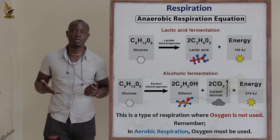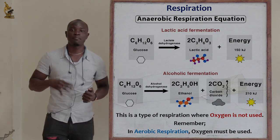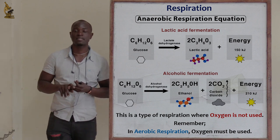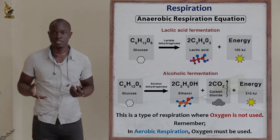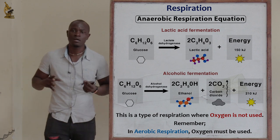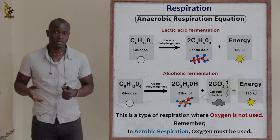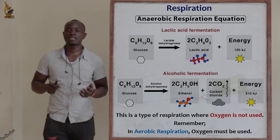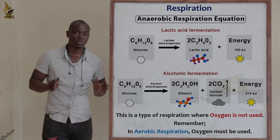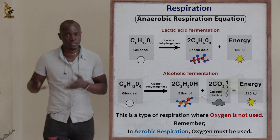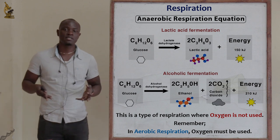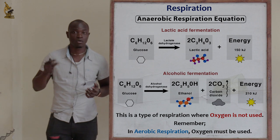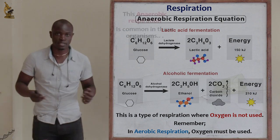That is anaerobic respiration. It mainly involves the breakdown of food substrate — proteins, fats, carbohydrates — in the absence of oxygen. Oxygen is not required for this respiration to take place. If oxygen is made available, the organisms undertaking anaerobic respiration are going to die because oxygen will be poisonous to these organisms.